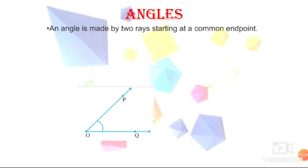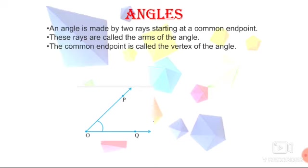When you observe the figure here we have an angle POQ. When two rays start from a common endpoint they form an angle. These rays are called arms of the angle and the common endpoint is called the vertex. Here the rays of the angle are PO and OQ whereas the common endpoint vertex is point O.